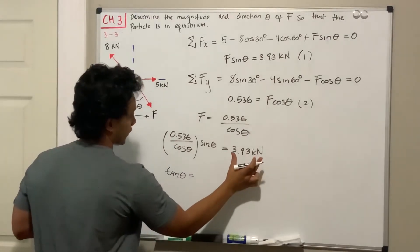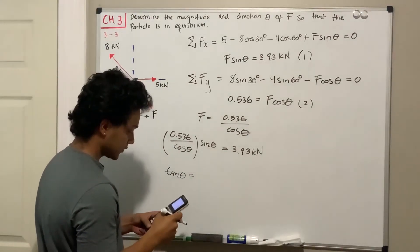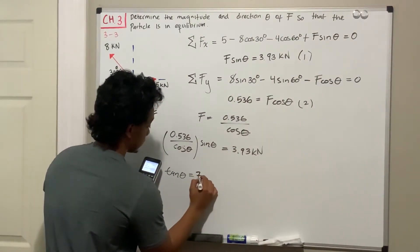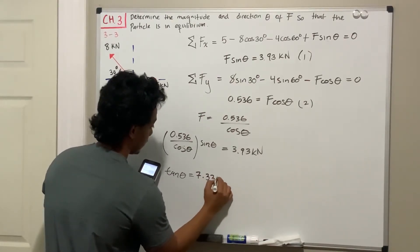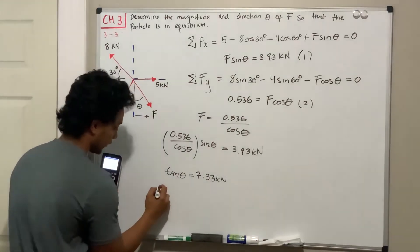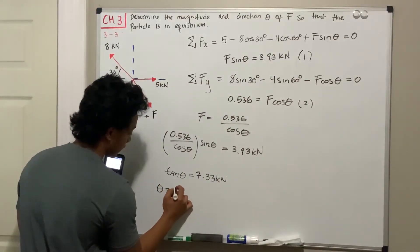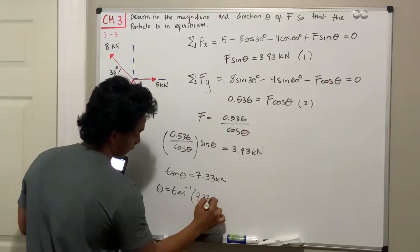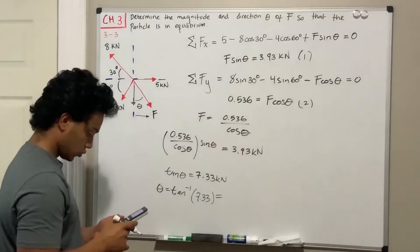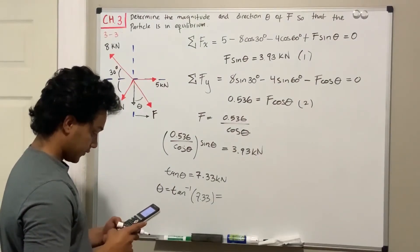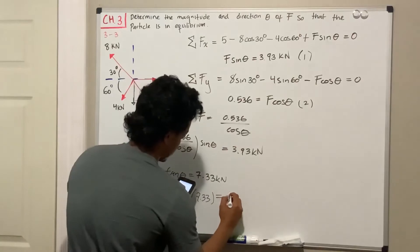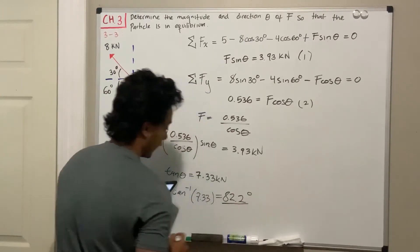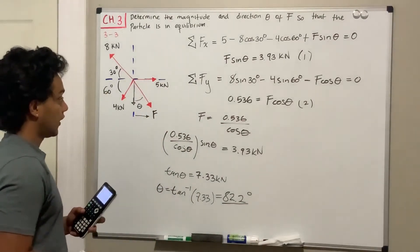To solve for theta, we take the inverse tangent of 7.33, which equals 82.2 degrees. So we've found the angle theta.